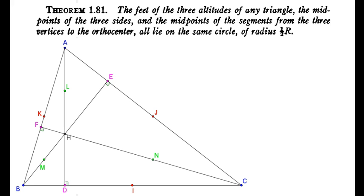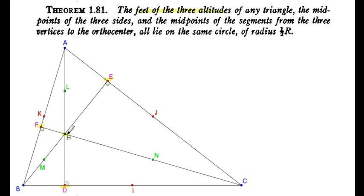Let's highlight some key facts. The feet of the three altitudes — when we look at this shape we see triangle ABC, and the feet of our altitudes are D, E, and F. H is the orthocenter, the intersection of these altitudes.